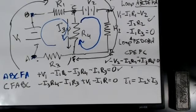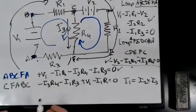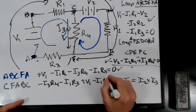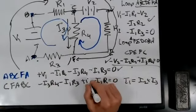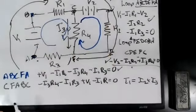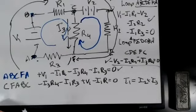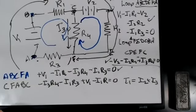To get down to brass tacks: on a test I'll probably just give you a single loop and you'll get a choice of three or four equations, and you'll have to pick the one that correctly describes what happens going around that loop. Did that answer your question?